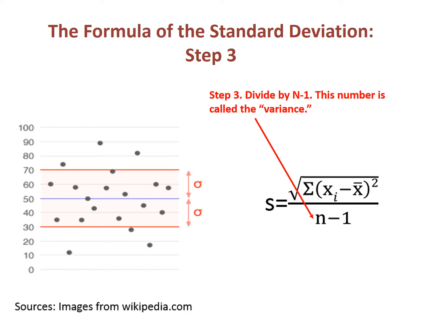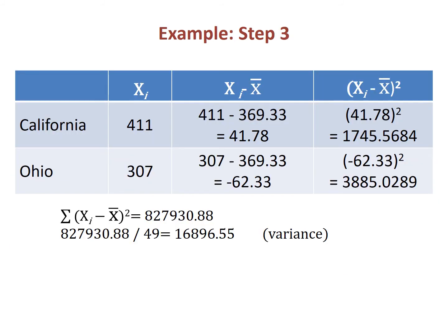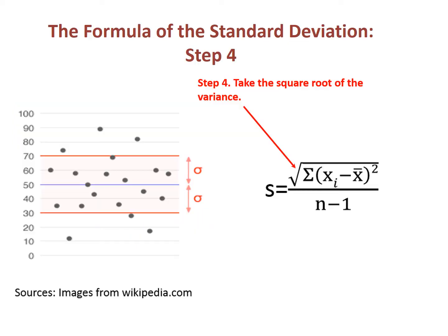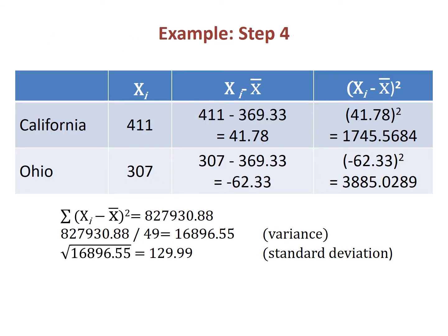In Excel, the variance number is included in the output. Here the variance is calculated for the example. For the final step, we take the square root of the variance, which undoes the squaring from earlier. This gives us the standard deviation. The standard deviation is the measure of dispersion associated with the mean, and refers to the average distance each point in the distribution is from the mean. It is symbolized by the Greek letter sigma, or the English letter s. On the right of this slide, we see the full formula for the standard deviation.